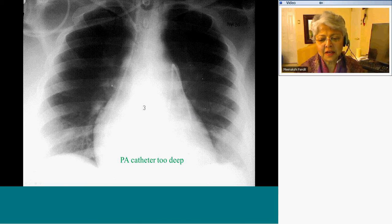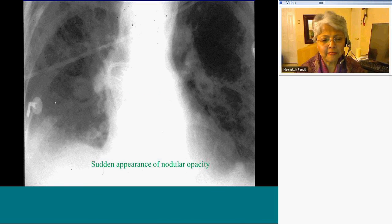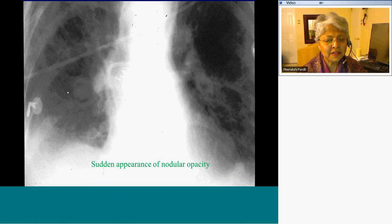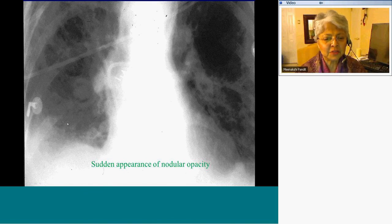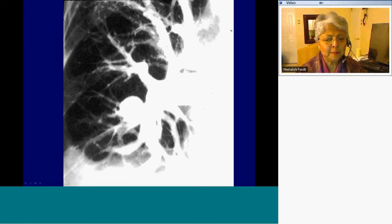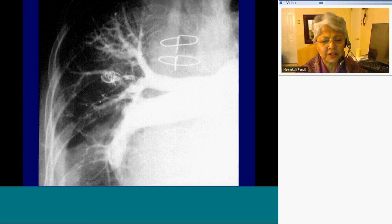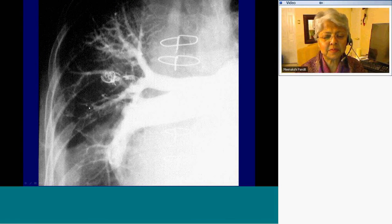Somebody in the CCU had a PA catheter for a long period of time and developed overnight this rounded opacity — the sudden appearance of a nodular opacity in the central lung zone, highly suspicious for a pseudoaneurysm. It was proven by angiography. Another example of a rounded opacity that appeared was also proven to be a pseudoaneurysm, which was subsequently embolized.